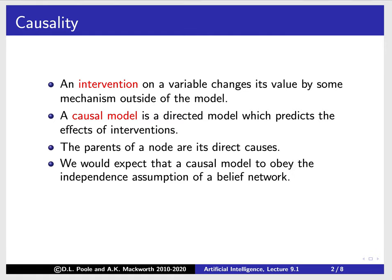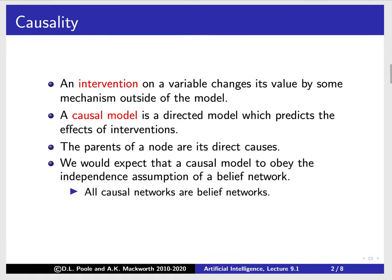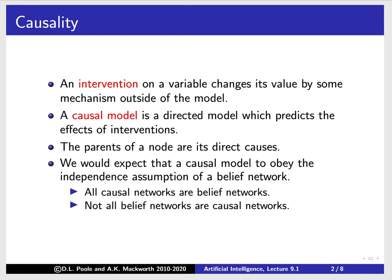We expect a causal model to obey the independence of a belief network. So all causal networks are belief networks, because all that a belief network is is a network that incorporates this conditional independence assumption. However, not all belief networks are causal networks, because we don't necessarily have to order the variables such that parents represent direct causes.